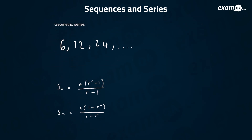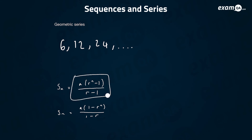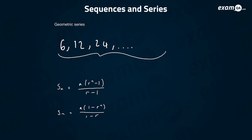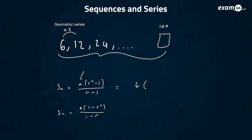Finally, we'll go over geometric series. Geometric series is based on geometric sequences — when you multiply to get to the next number. The formula for the sum of the first n terms is: Sn equals a times (r to the power of n minus 1) all over (r minus 1). Where a is the first number and r is the common ratio. For this sequence, a is 6 and r is 2, so we just plug in n equals 100 to get the sum of the first 100 numbers.